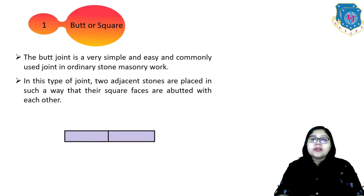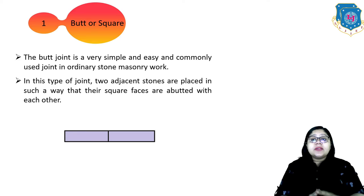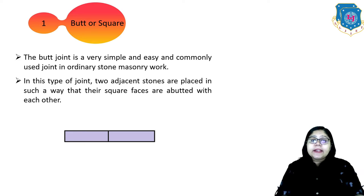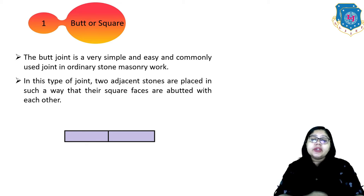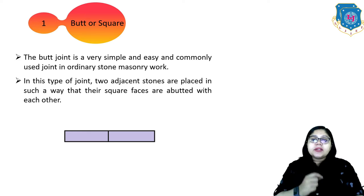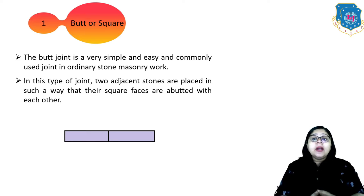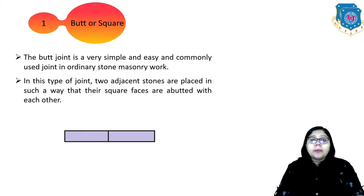The first one is the butt or square joint. It is a very simple, easy and commonly used joint in ordinary stone masonry work. In this type of joint, two adjacent stones are placed in such a way that their square faces are abutted with each other, as shown in this figure.